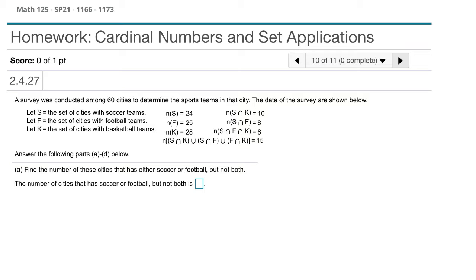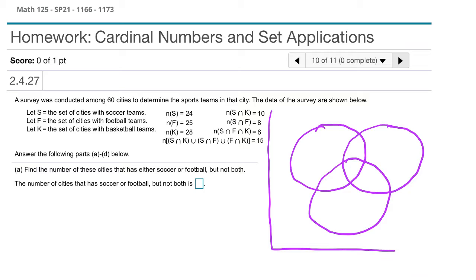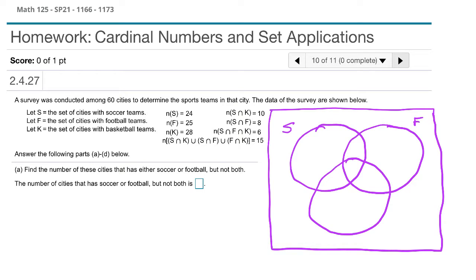We've got three sets: S, F, and K. That tells us we're going to have three circles that we're going to label. We've got our three circles, and then we've got our universal set on the outside. So our three circles represent cities that have soccer teams, cities that have football teams, and cities that have basketball teams. We're given information about those cardinalities.